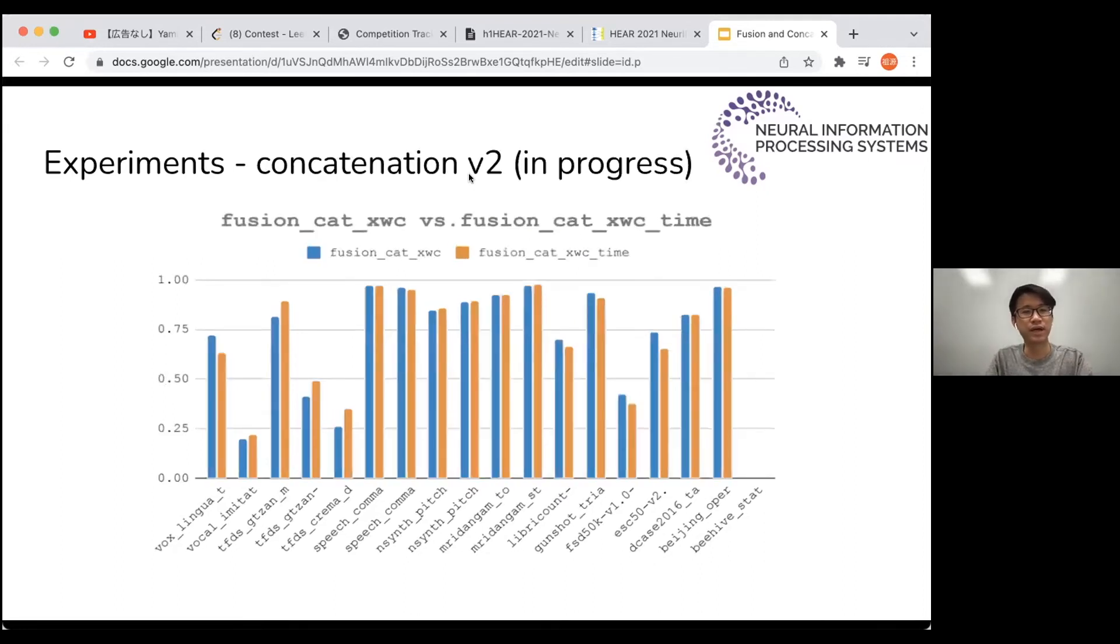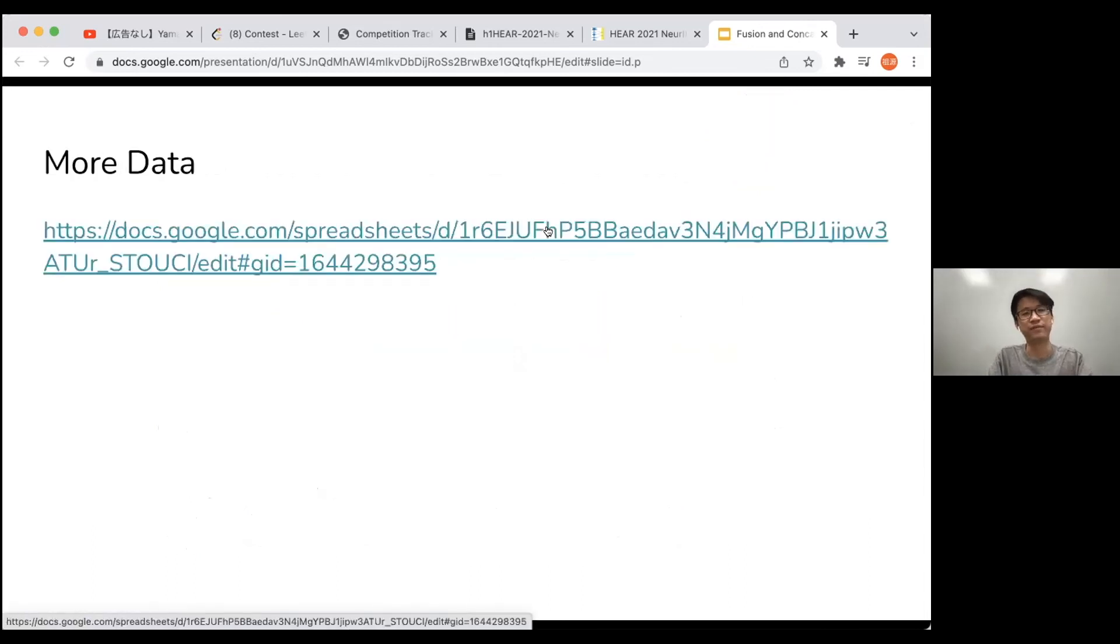We are also digging into different kinds of concatenation methods. We have version 2 concatenation, but it's still in progress. This fusion_cat_xwc_time is the V2 concatenation. It has a hyperparameter that we haven't fine-tuned yet, so we use the default value to attend this competition. The result shows that the V2 is slightly worse than the original one. But I have to mention that we haven't fine-tuned the hyperparameter used in this method. We have a lot more data collected, but we have no time to clean it because it needs a process of data mining.